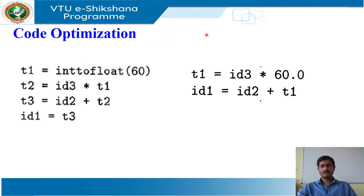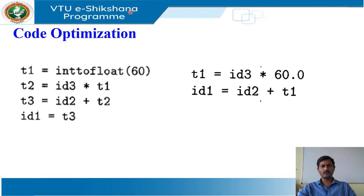There is a great variation in the amount of code optimization that different compilers perform. In those compilers that do the most, the so-called optimizing compilers, a significant amount of time is spent on this phase. There are simple optimizations that significantly improve the running time of the target program without slowing down the compilation too much.